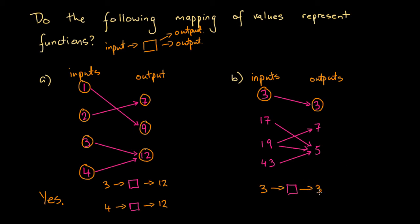It's completely fine that the input and output are the same. The important thing to analyze is whether each input is associated with one output or two or more. Here input 3 is associated with only one output, so this could be a function at this point. Moving to input 17: sure enough, 17 is associated with just a single output of 5, so we could still be facing a function.